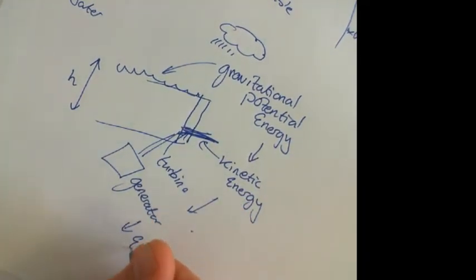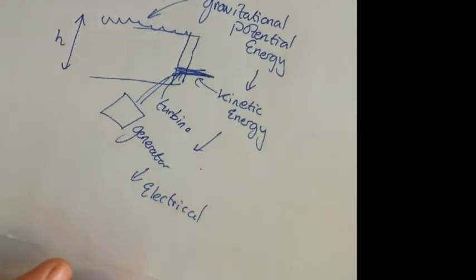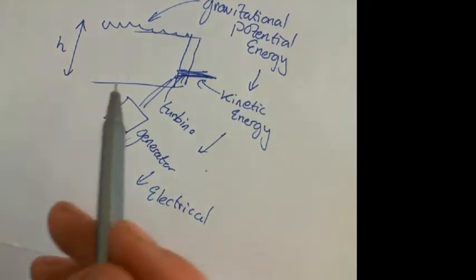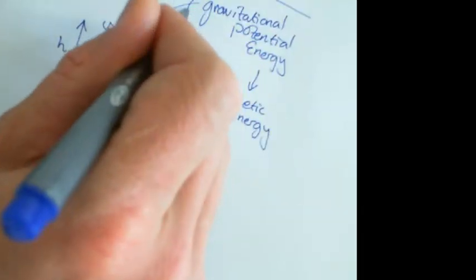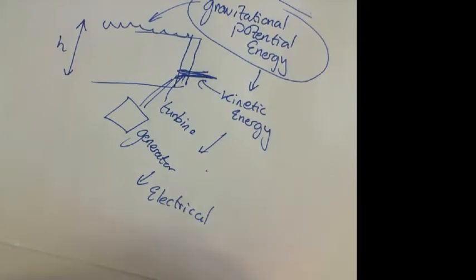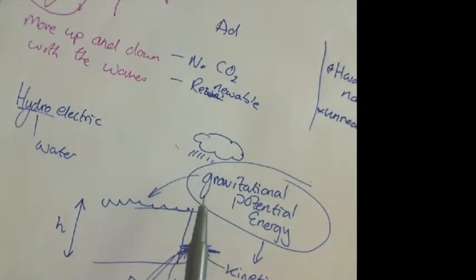And that quite often gets asked on exam-style questions for you to describe the energy transfers in a dam or a hydroelectric dam system. And the one that people always forget is they always forget that the energy that it had to start with is gravitational potential energy. The water is high up, is taken high up by the clouds.